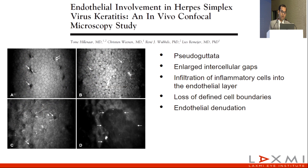Confocal microscopic studies have shown that viral endothelitis may have features such as pseudoguttae, enlarged intercellular gaps, infiltration of inflammatory cells, loss of defined cell boundaries of the endothelium, and endothelial denudation. As you can see, the endothelium is the target of this entity and it has a significant effect on overall endothelial function.